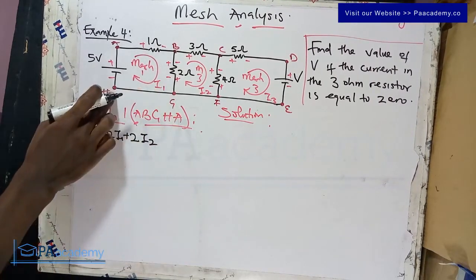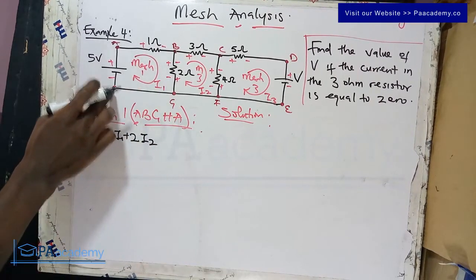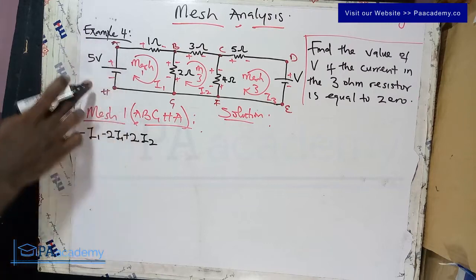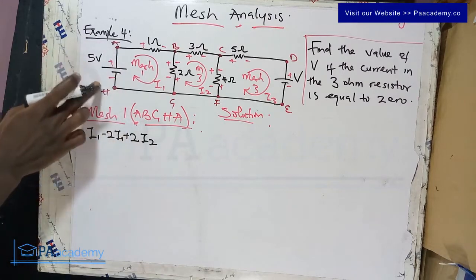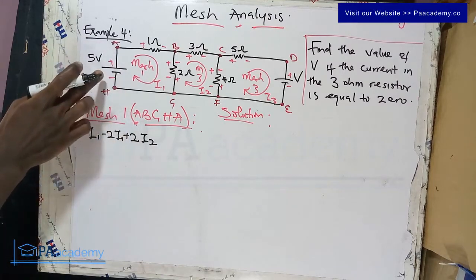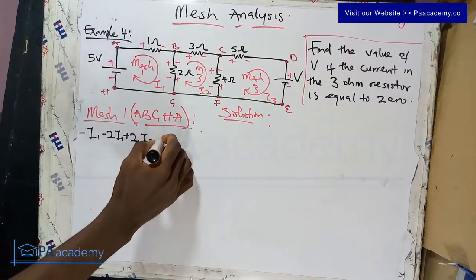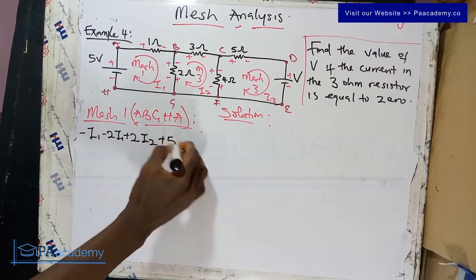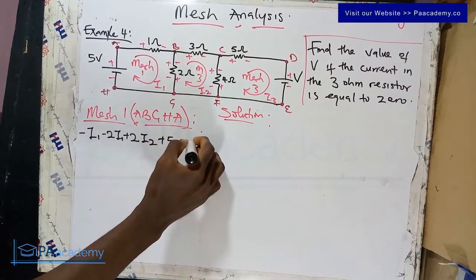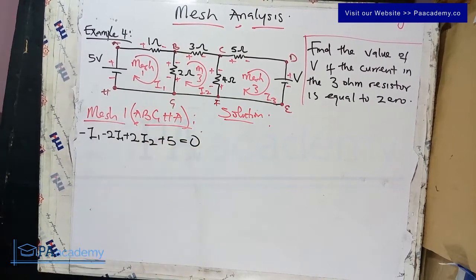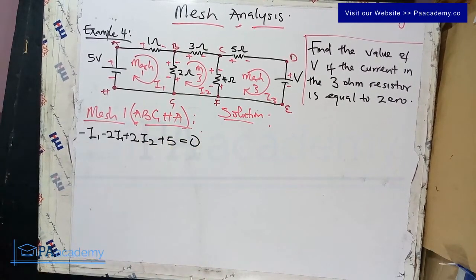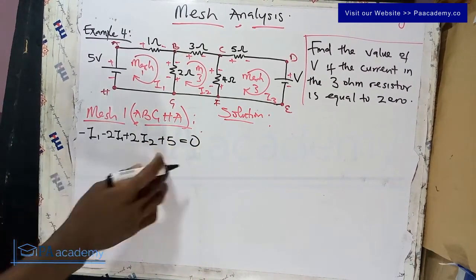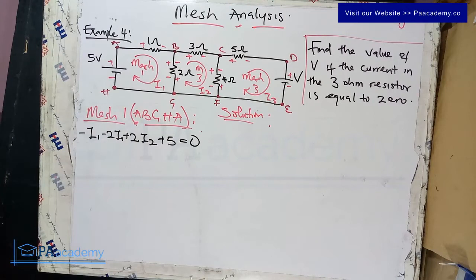From g to h there is nothing. Then from h back to a we have the five-volt voltage source — from minus to plus, that gives plus 5, equals to zero.